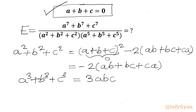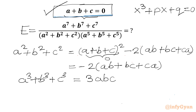Now I will consider one cubic equation whose roots are A, B, and C. So I can write X cubed plus PX plus Q equal to 0. Using Vieta's formulas, I can write three equations. The sum of roots will be 0 over 1, which is 0 — already consistent with our condition.